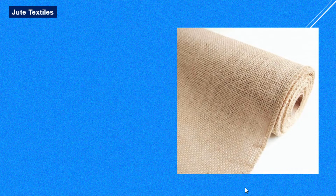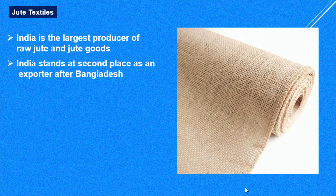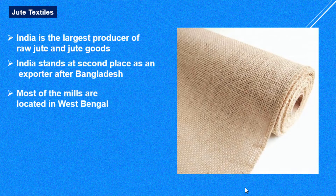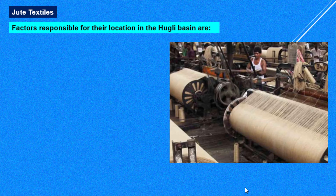India is the largest producer of raw jute and jute goods. India stands second as an exporter after Bangladesh, so when it comes to export, Bangladesh ranks first. Most of the mills in India are located in West Bengal. India's 70% of jute production comes from West Bengal, with the rest from neighboring states. In West Bengal, they are mainly located along the bank of the river Hugli in a narrow belt.